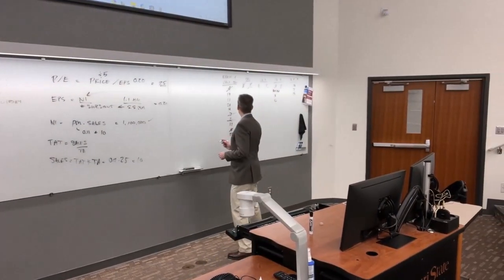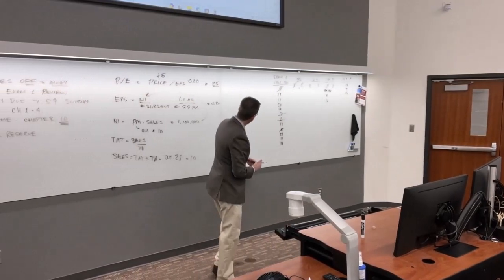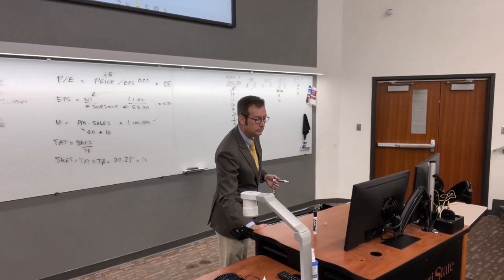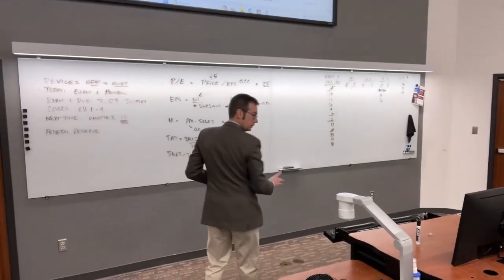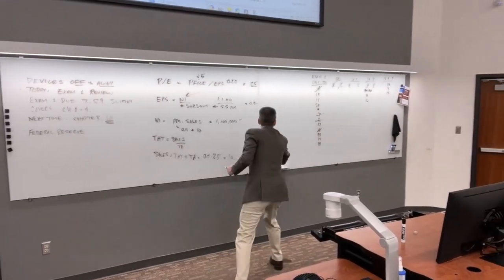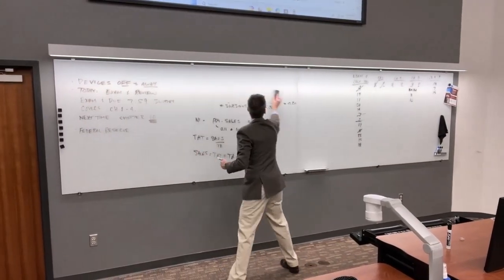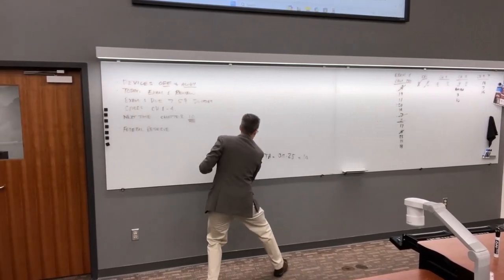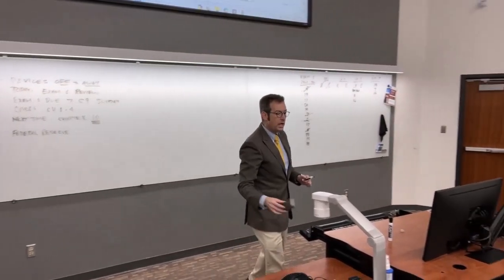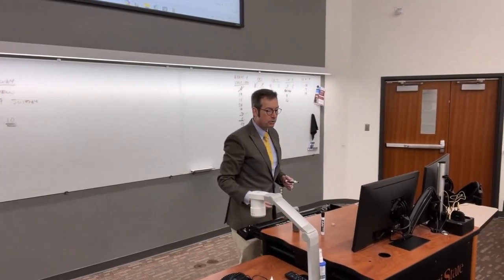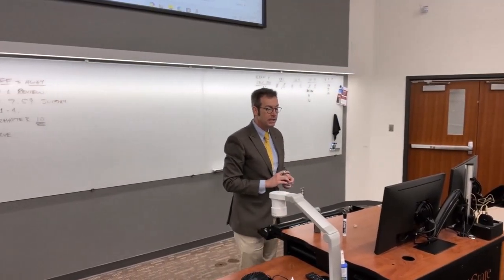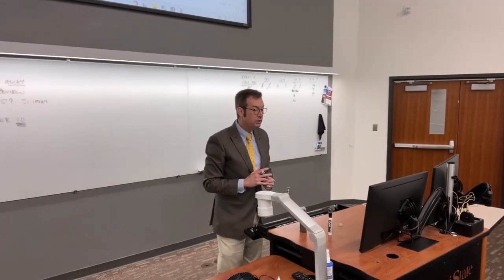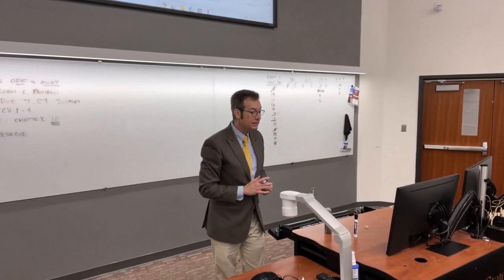That was number eight. Now we're on to number eleven. Bunko Inc. reported a debt-to-equity ratio of 2.1 times at the end of 2033. If the firm's total assets at year-end are $200 million, how much of their assets are financed with equity?